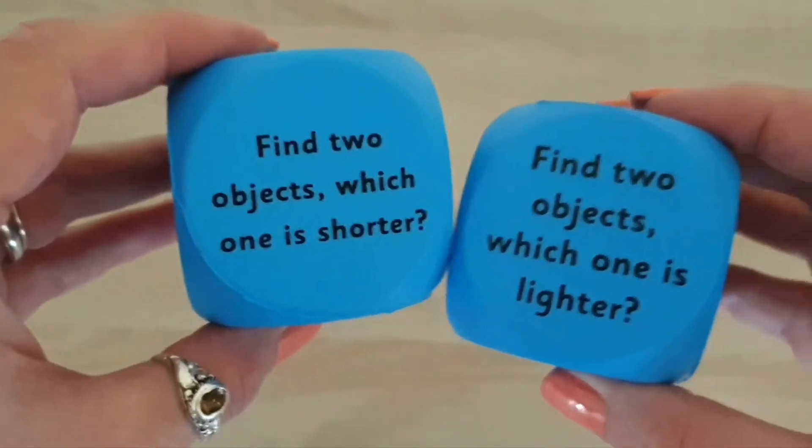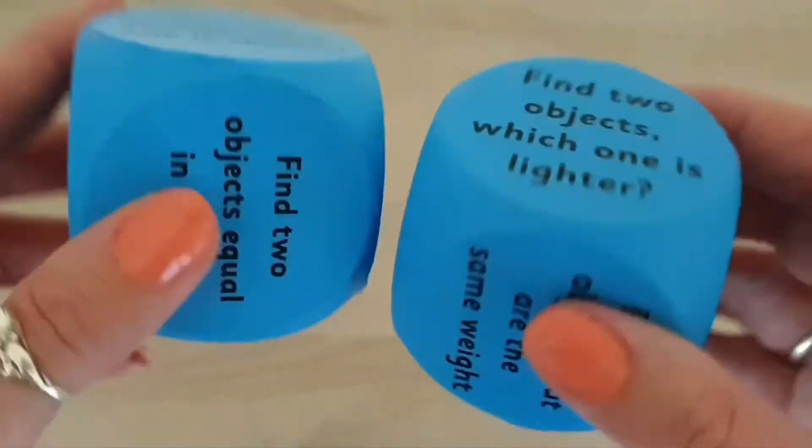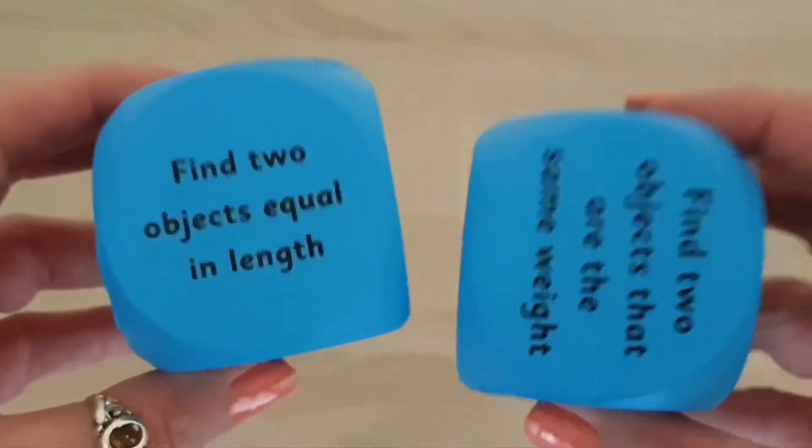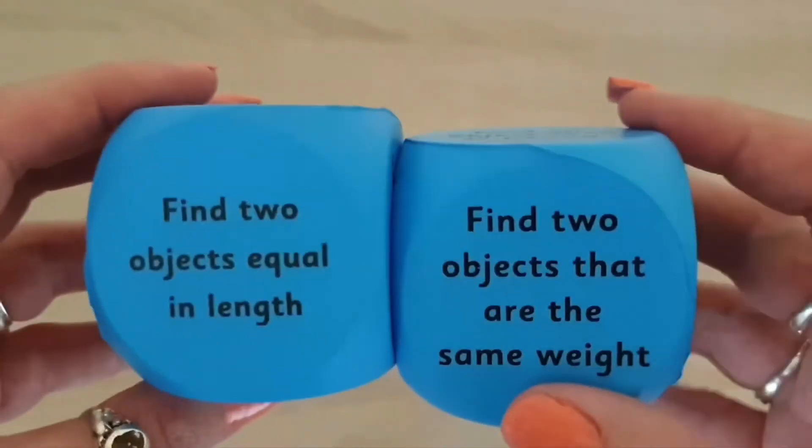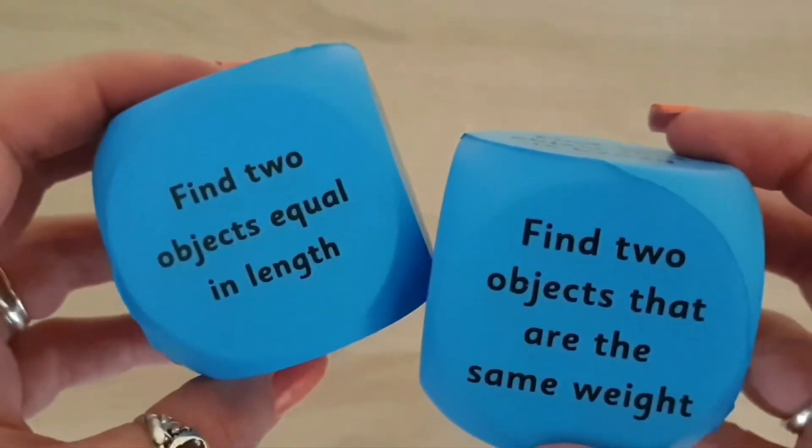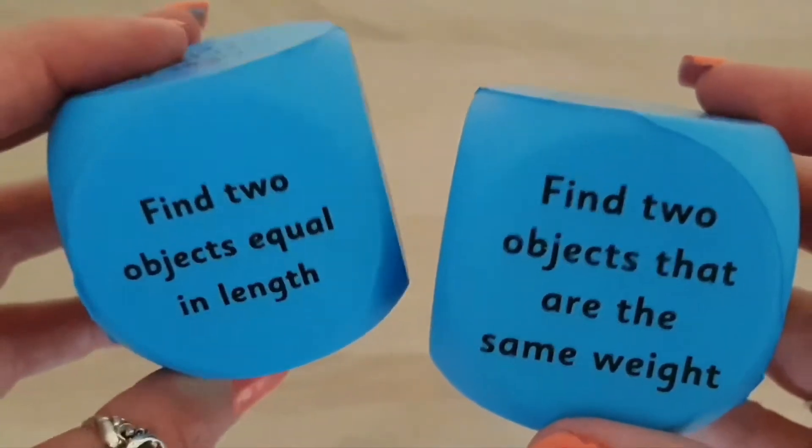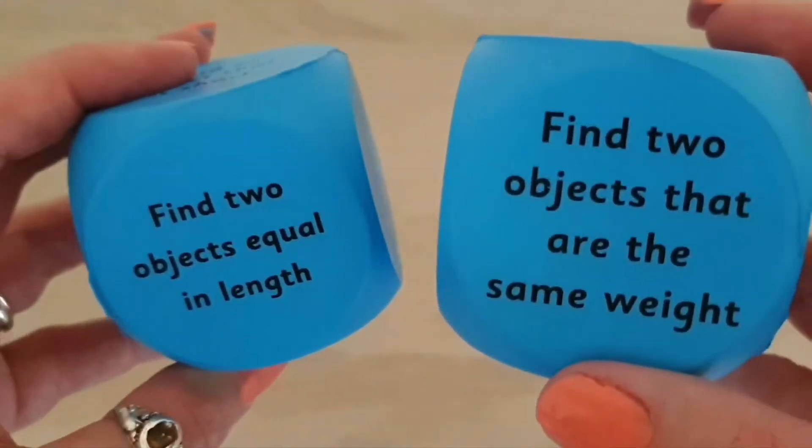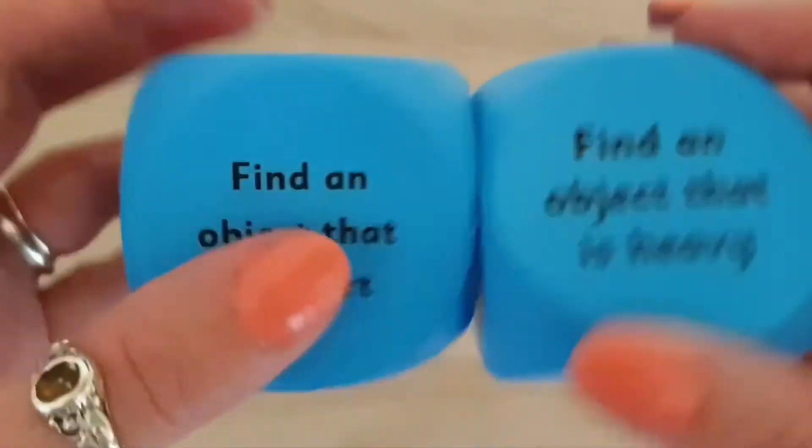Now you can see that these length and weight cubes have a lot of different vocabulary on them that is fantastic for developing children's talking ability about things like equal, length, weight, longer, shorter, heavy.